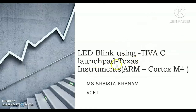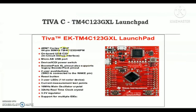In this Launchpad, it is mainly consisting of ARM Cortex M4, 64-pin, working at a maximum of 80 MHz. The actual chip number is TM4C123GH6PM. We will first see what features are offered by this TM4C123GH6PM.